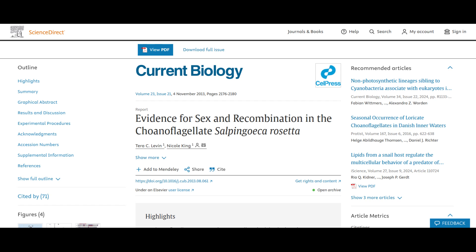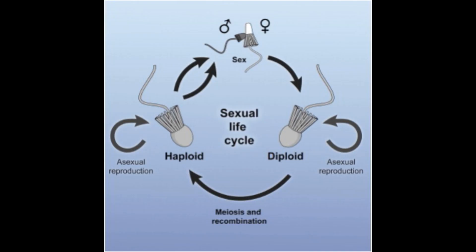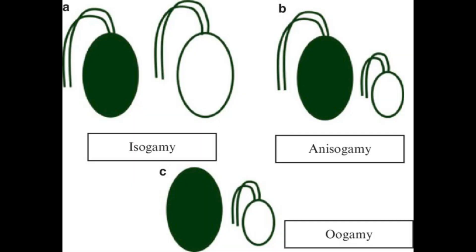A 2013 paper by Tara C. Levin and Nicole King explored reproduction in Salpingoeca rosetta. Under conditions of nutrient limitation, these haploid cells sexually fuse into diploid individuals. However, both haploid and diploid choanoflagellates can undergo asexual reproduction. Remember that the mating system of animals is oogamy — large immobile eggs are fertilized by much smaller motile sperm. For choanoflagellates, slightly smaller motile male gametes fertilize slightly larger motile female gametes, making their mating system anisogamous.